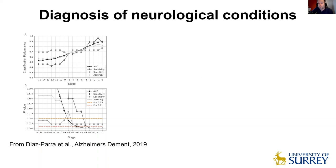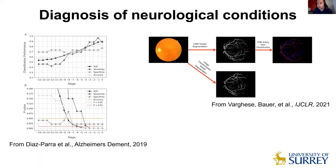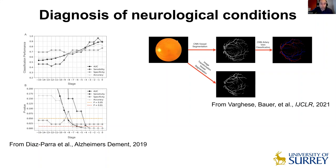We can also look at other data modalities, such as the retinal fundus. The retina is a neural tissue at the rear of the eye, and by looking at the retinal fundus we can obtain important information about the vasculature. Using different morphological features, we could again classify with high performance both Alzheimer's disease and Parkinson's disease. We are currently also looking into this in more detail in order to better study all the different features that might be informative here, and we are in touch with clinicians.